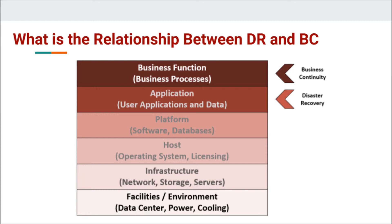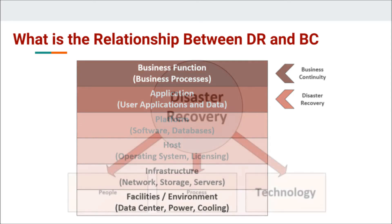Disaster recovery covers the application level. Business continuity covers how you use those applications, how you string them together, and how your business works. It may even go as far as talking about financials and things like how you survive if a key vendor goes offline, which has nothing to do with your technology stack directly.